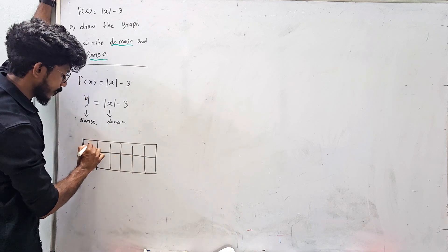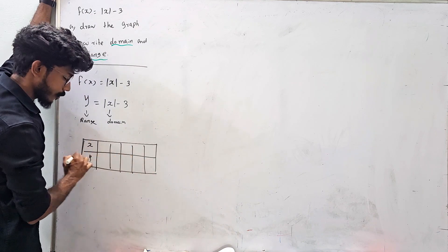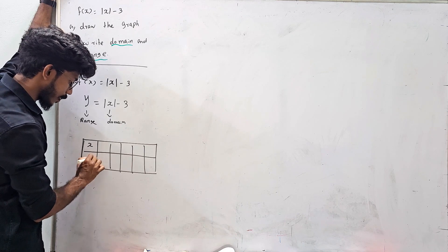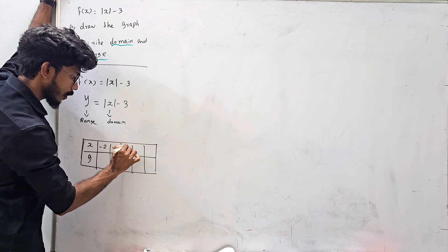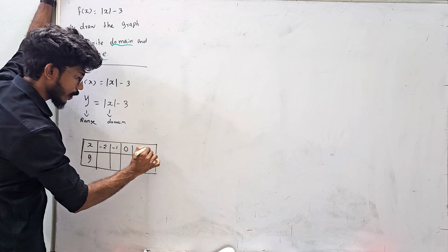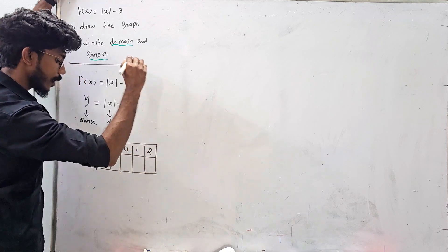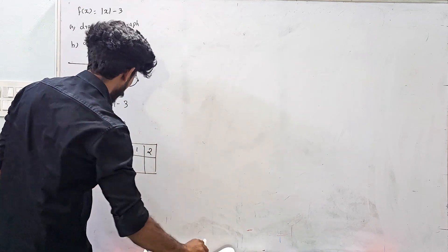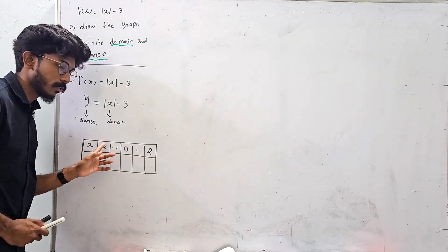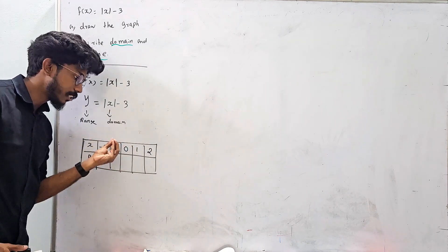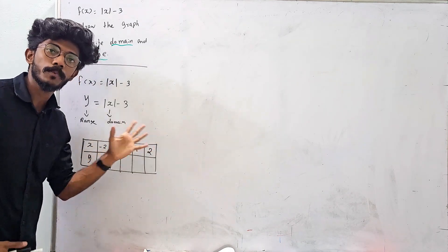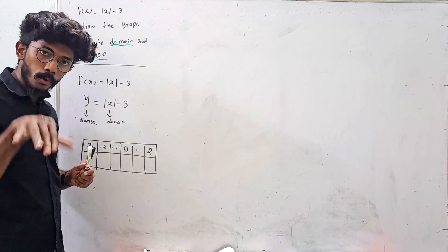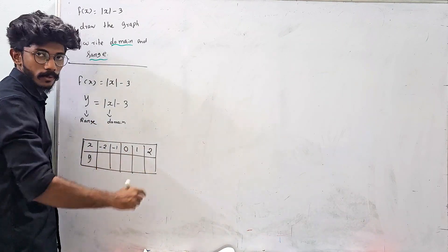This is x and y value. x takes values: minus 2, minus 1, 0, 1, 2. For negative x values and positive x values, we find the corresponding y value.